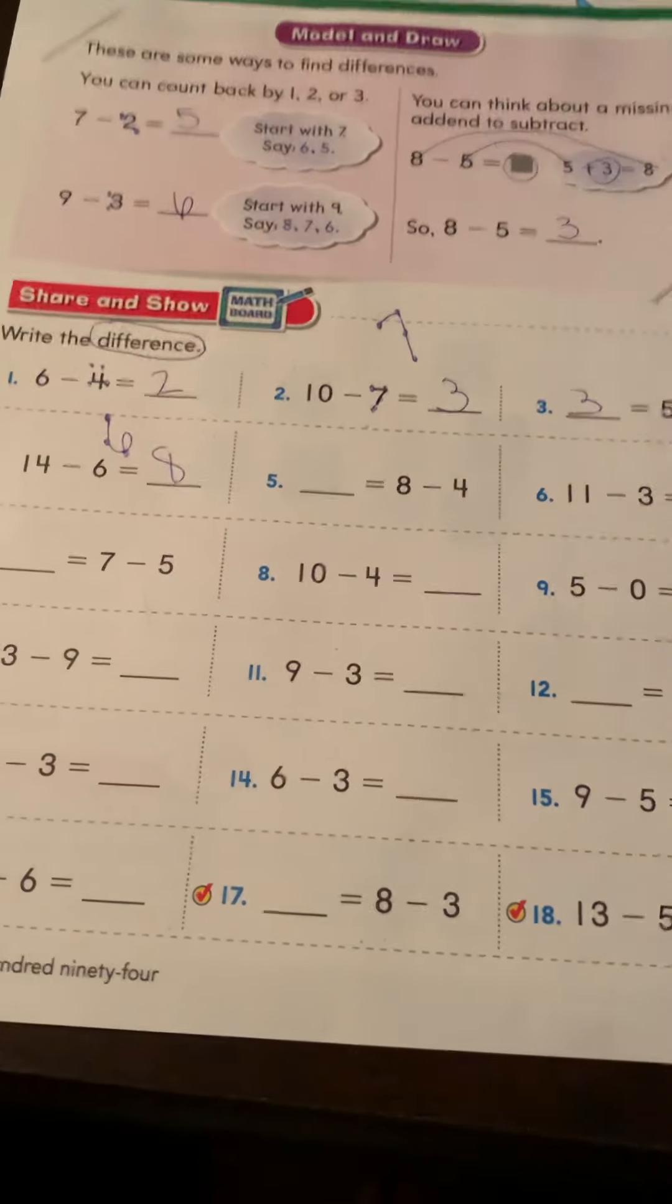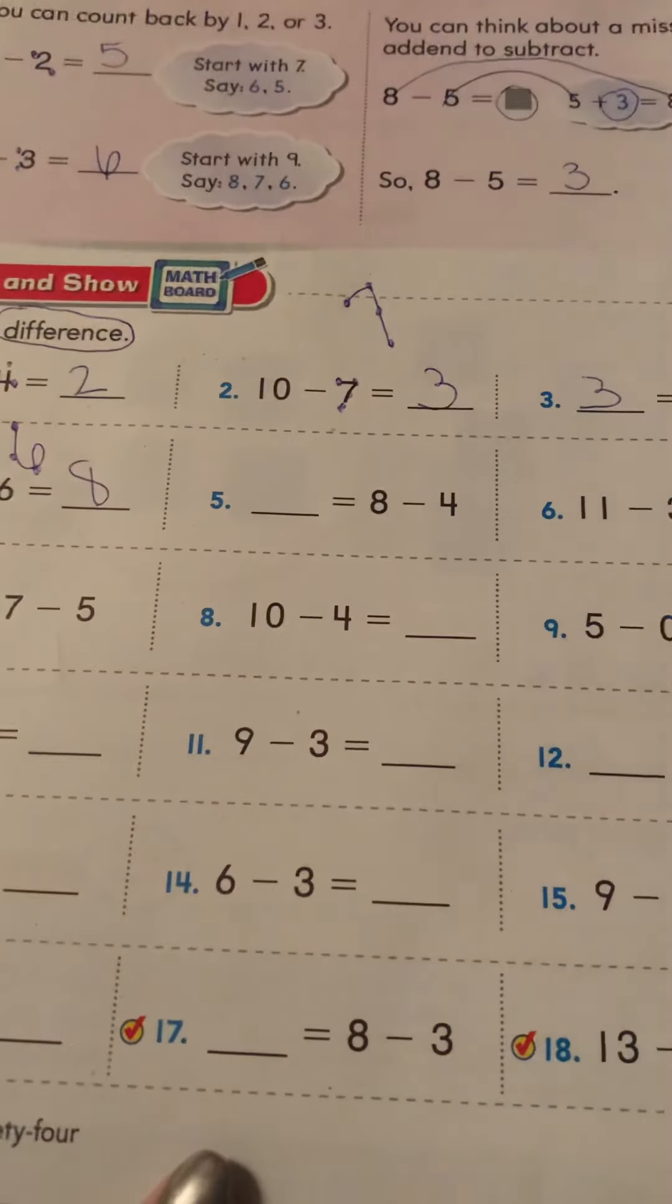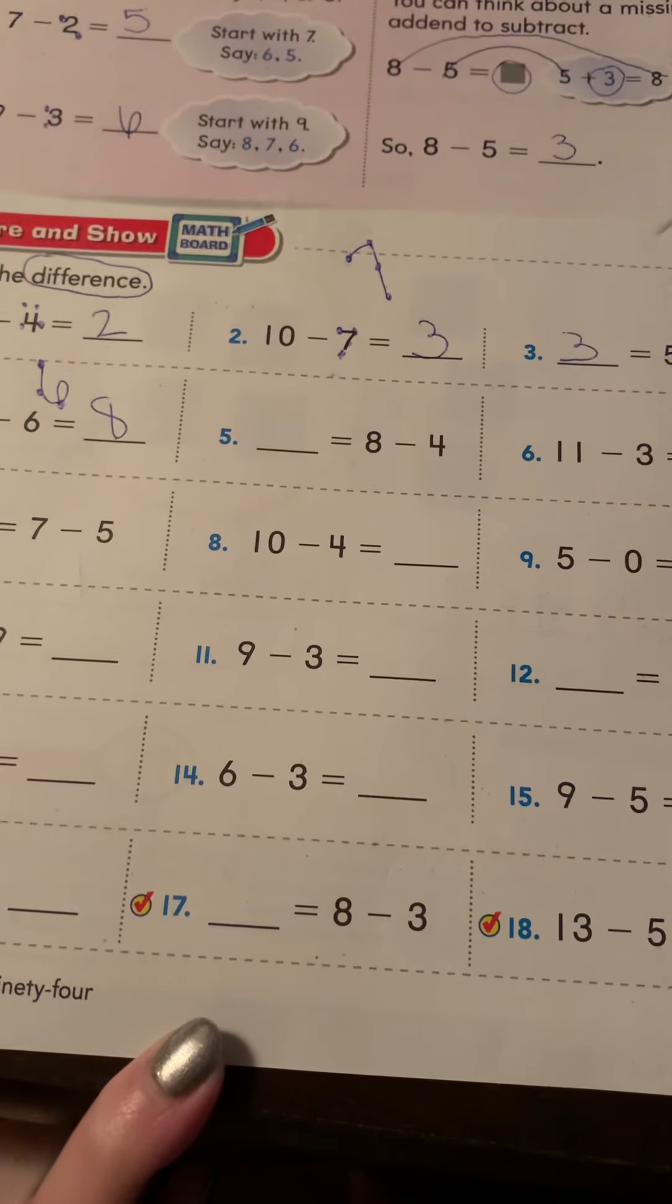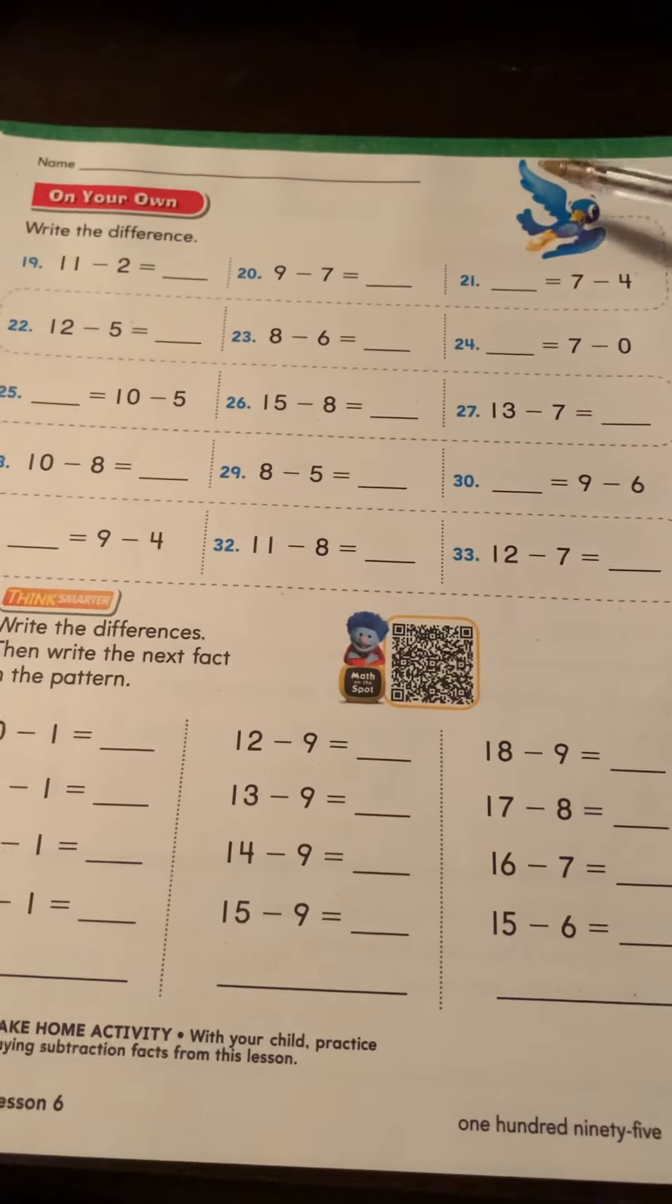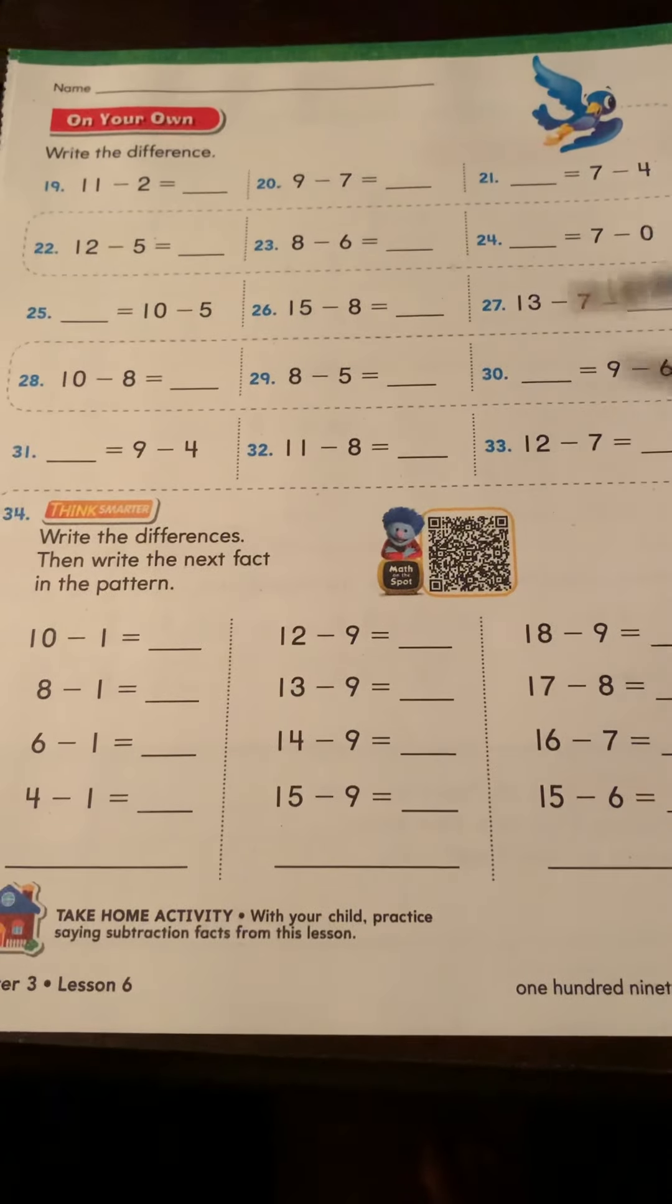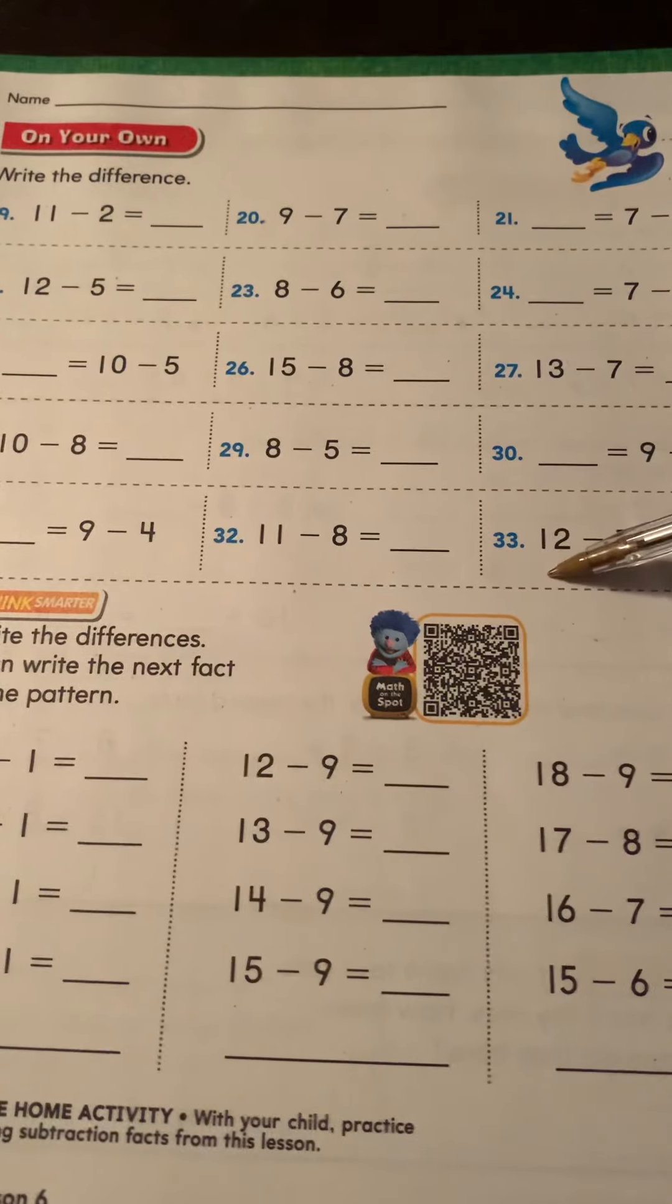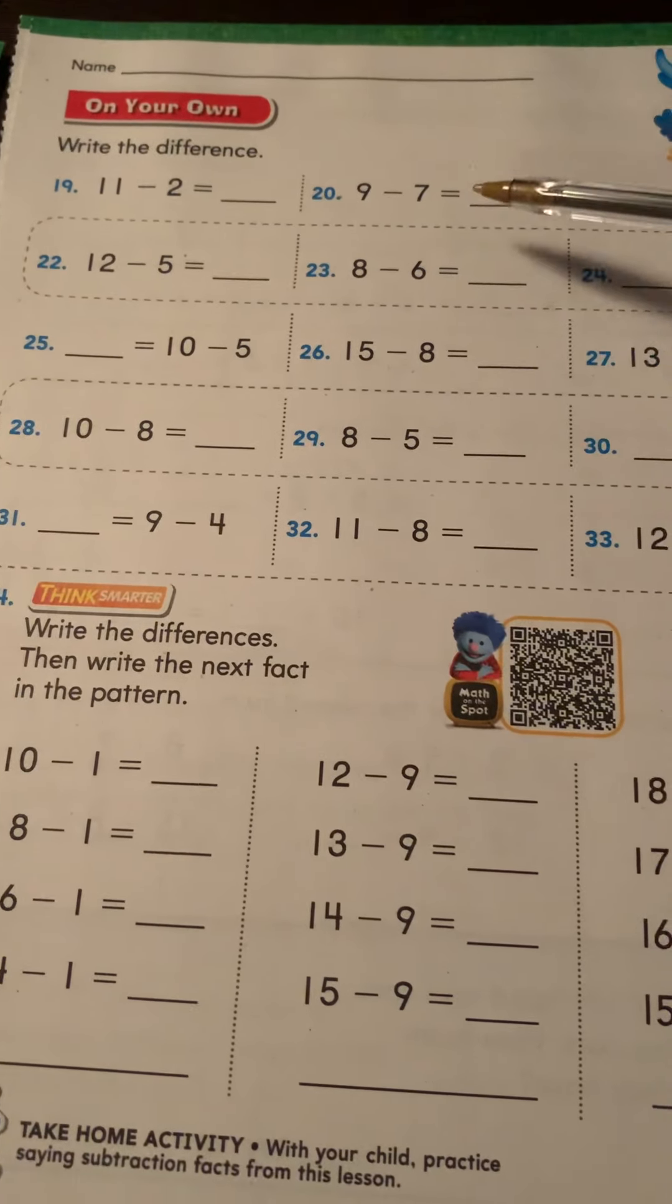So you're going to complete this page, the whole thing by yourself. Put your touch points on, count backwards. It's simple subtracting. This next page is more of these. These are very, very basic subtraction problems. Nothing fancy. You're just counting backwards.